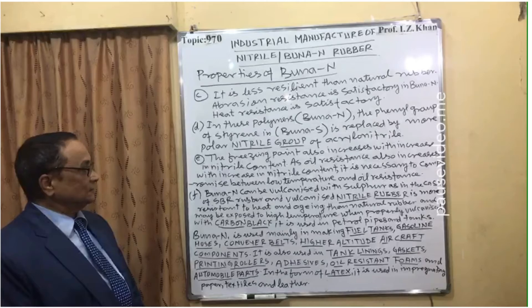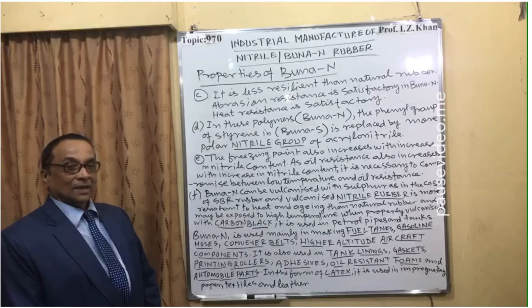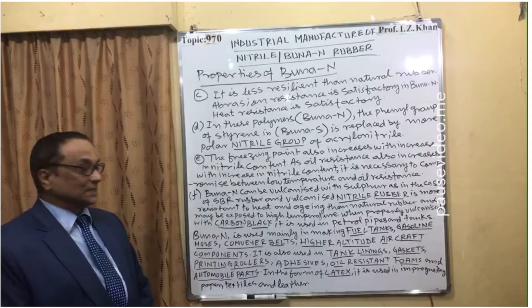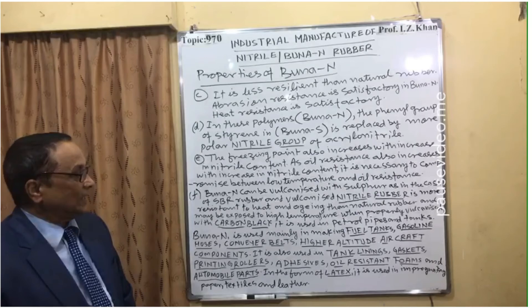Buna N can be vulcanized with sulfur, as in the case of SBR rubber. Vulcanized nitrile rubber is more resistant to heat and aging. When properly vulcanized, the rubber may be exposed to high temperatures.